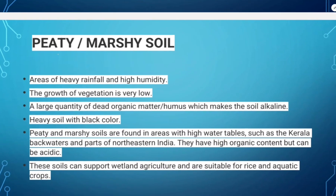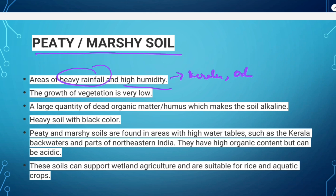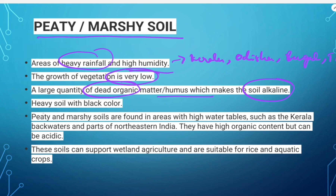Peat and marshy soil is found in areas of heavy rainfall and high humidity such as Kerala, Odisha, Bengal, and coastal areas of Tamil Nadu. The growth of vegetation is very low in this soil. It contains a large quantity of dead organic matter or humus, which makes the soil more alkaline. The soil is black in color. At many places it is also alkaline due to the presence of salt. The soil can support wetland agriculture and is suitable for rice and aquatic crops.